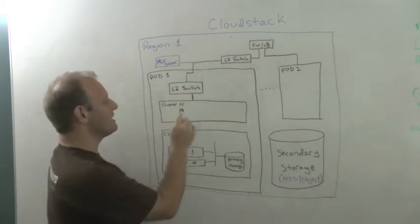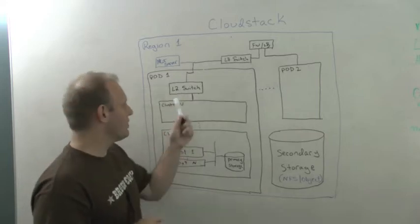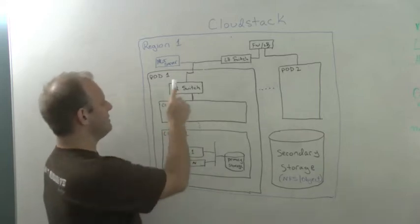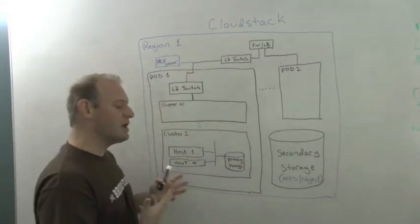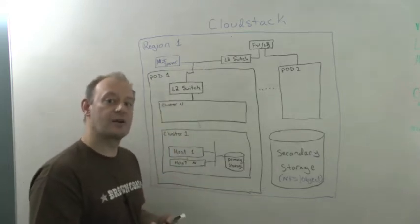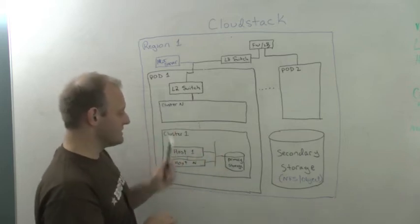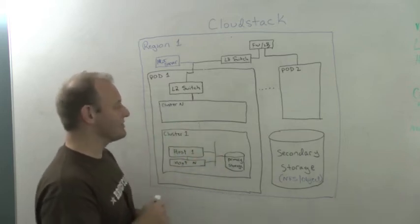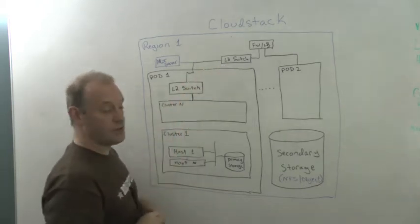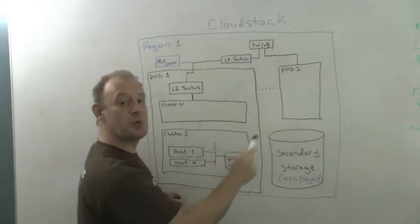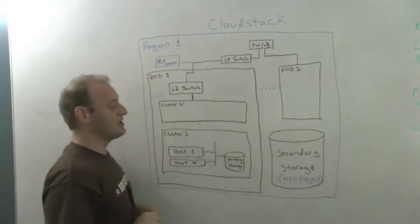We're actually taking that and combining all of that together with a layer 2 switch, and then combining all of that into what we call a pod. Think of a pod really as almost like a rack. Typically what is done is a rack is a cluster. And then from there we go up to a layer 3 switch. And you can have multiple pods — pod 1, pod 2, et cetera.